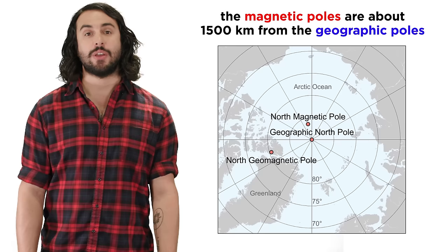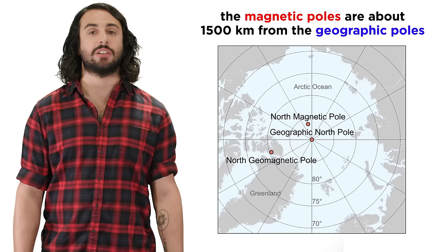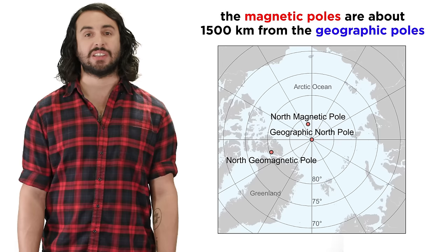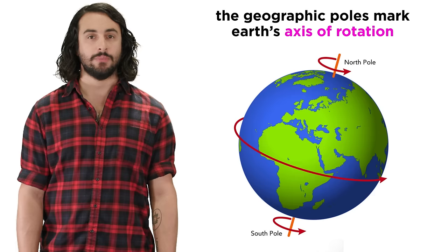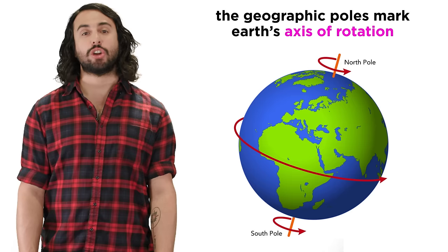In this way, Earth itself is a giant bar magnet, with the magnetic north pole about 1,500 kilometers from the geographic north pole and the magnetic south pole about the same distance from the geographic south pole.